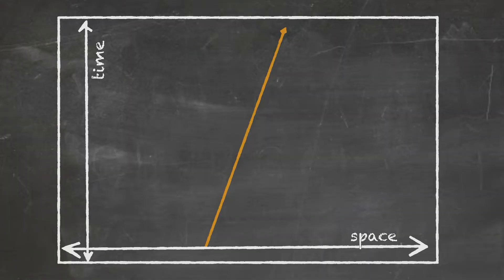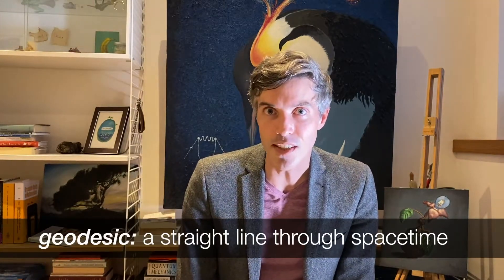What about inertial motion? Remember inertial motion? Inertial motion is constant speed in a straight line. So inertial motion in a space-time is represented by a straight line. There's another fancy word for that that you should know. A straight line through space-time is sometimes called a geodesic.